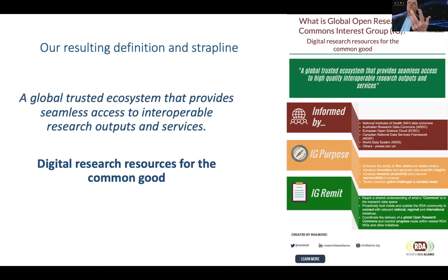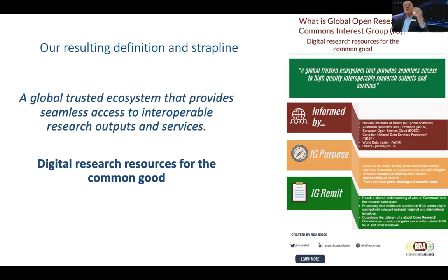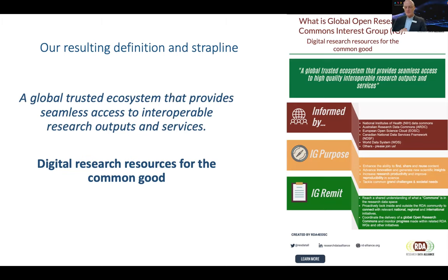We tried early on to define what we were going to focus on. What we're really trying to build — or at least build with others — is a global trusted ecosystem: an ecosystem of services and outputs with seamless access. That was what we were shooting for, drawing together things like the Planet Research Data Commons in Australia with similar activities overseas to build towards this global trusted ecosystem. The strap line, if we ever print bumper stickers, would be something like: digital research resources for the common good.